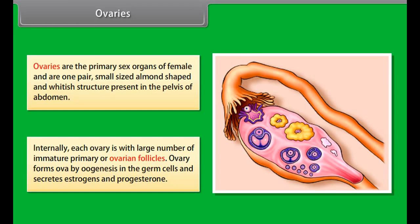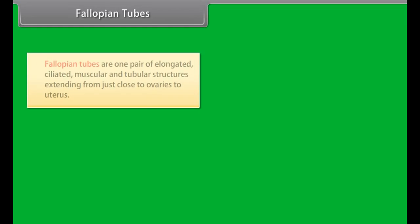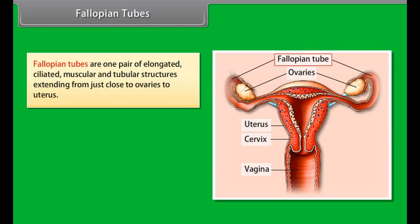Cowper's glands secrete alkaline semen which neutralizes acidity of urine, activates sperms, and provides nutrition to the sperms. A human sperm is a minute, microscopic, motile, and flagellated gamete. It is formed of a head, middle piece, and a long vibratile tail. It fuses with the ovum and transmits parental genes to offspring.